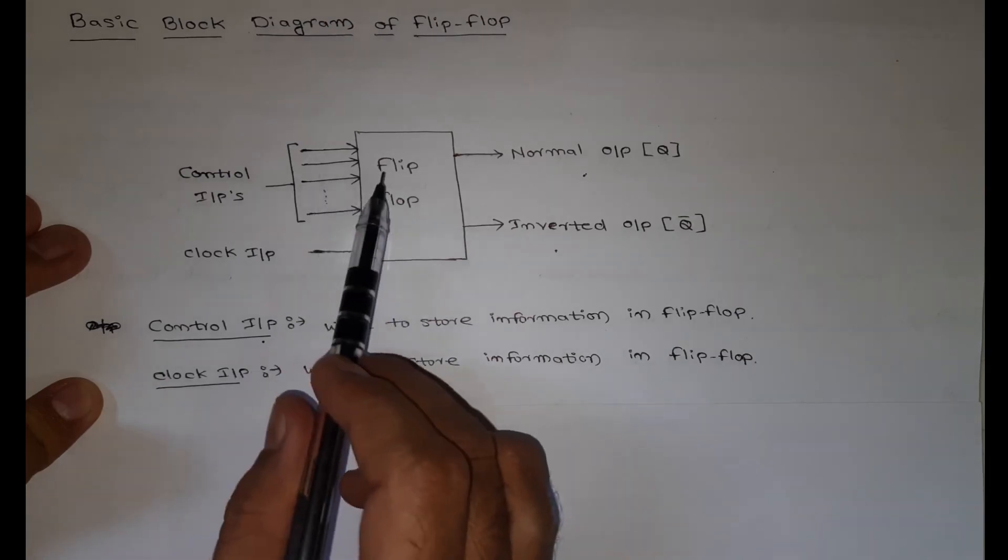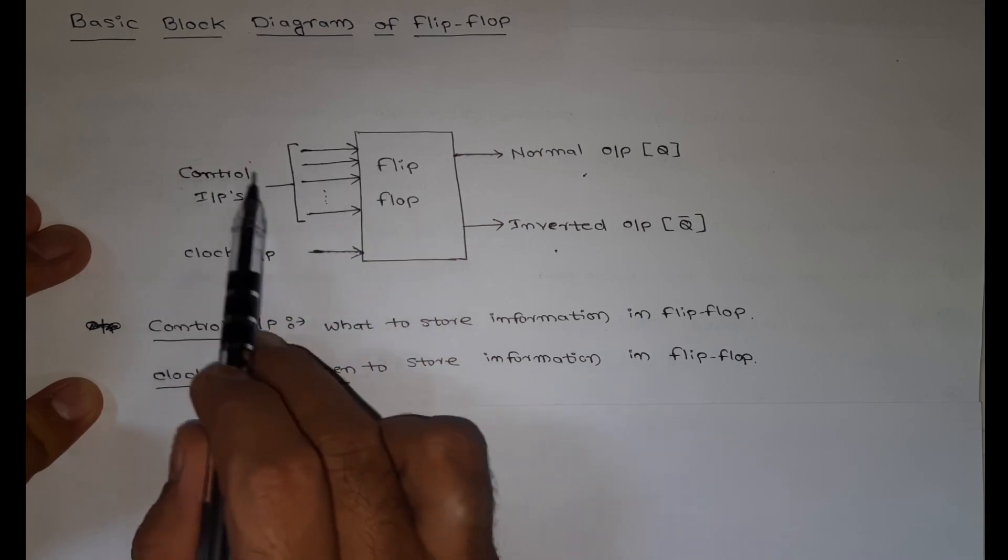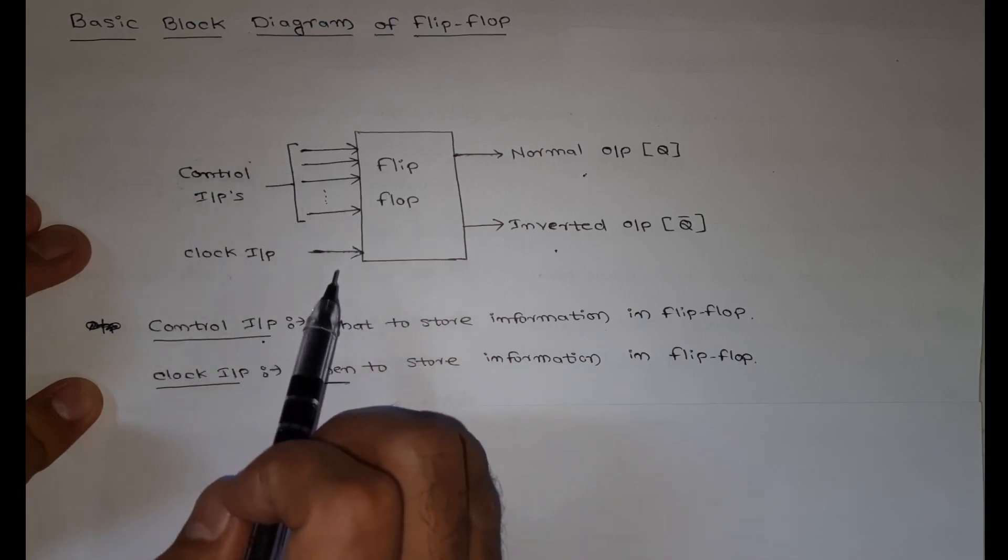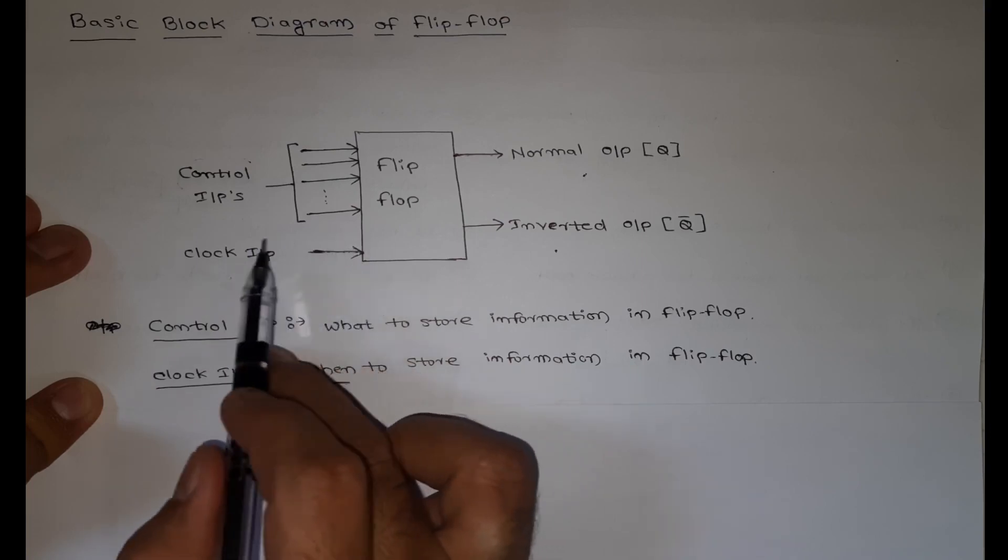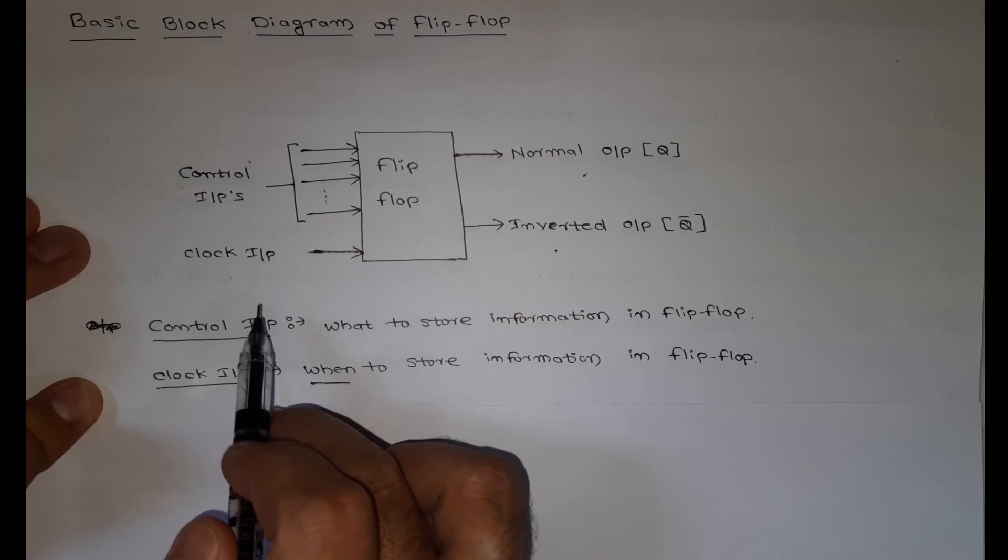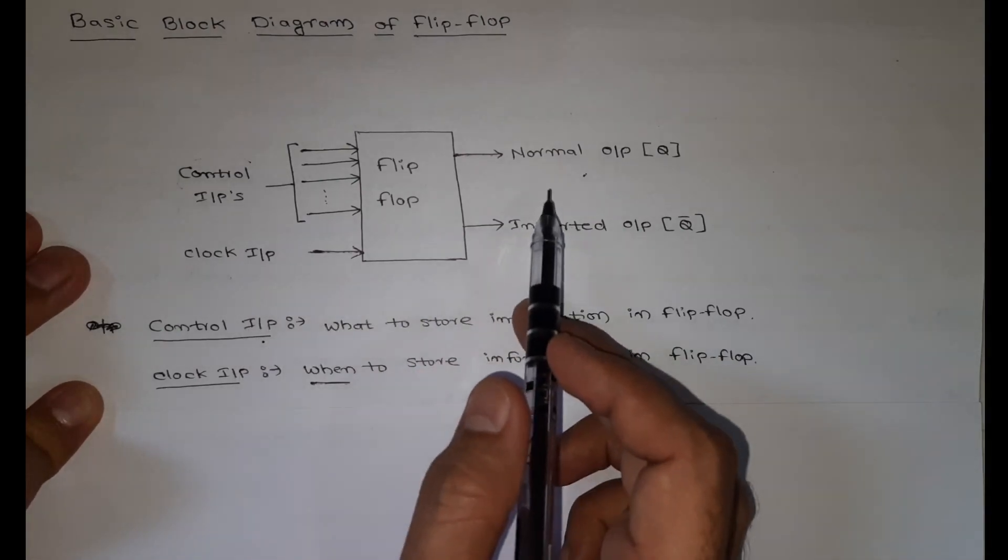Whether we want to store 0 or 1, the control input will decide. And at what particular instant of time we need to store this information, the clock will decide. Here we have two